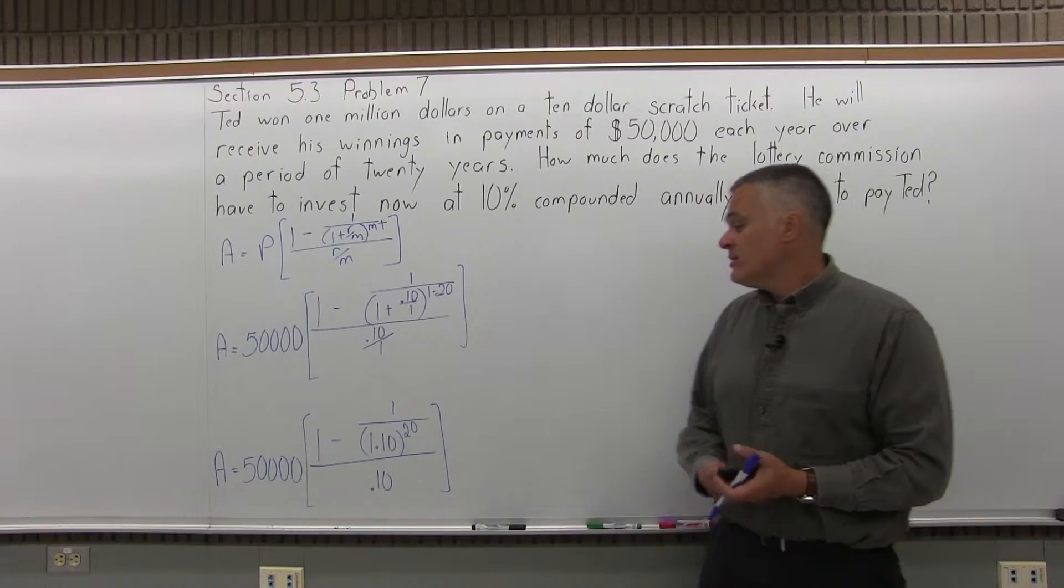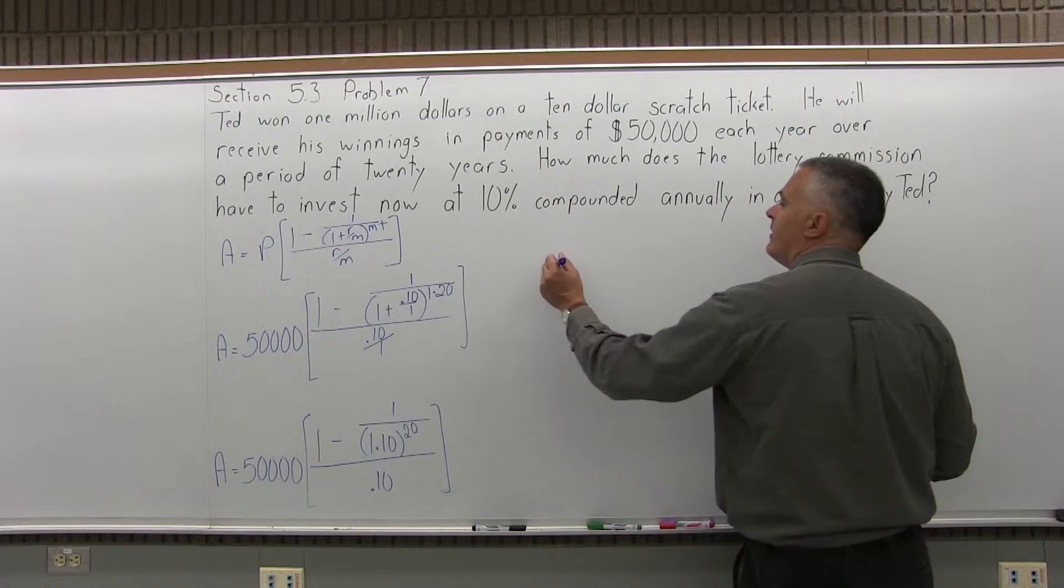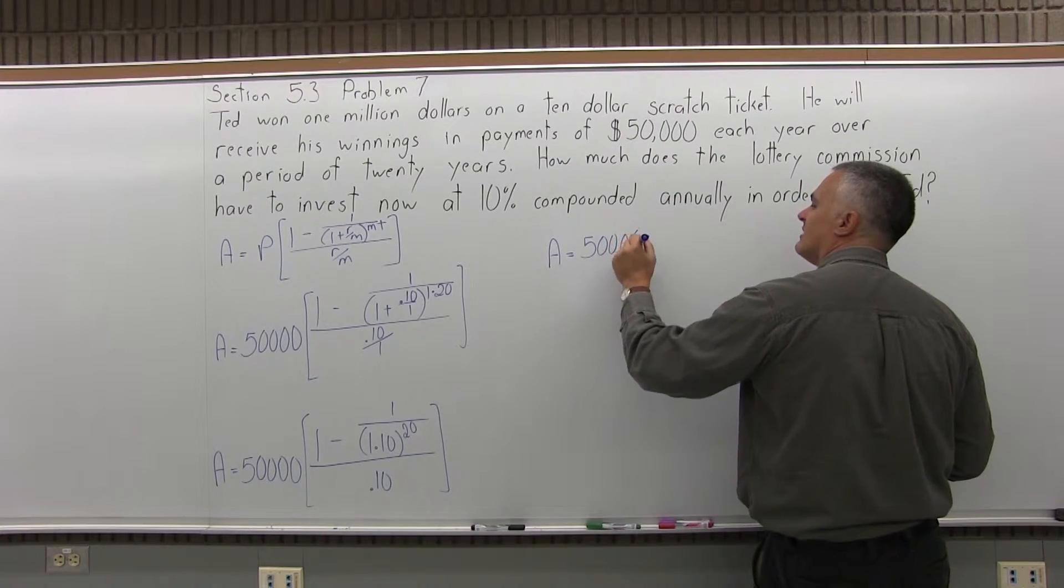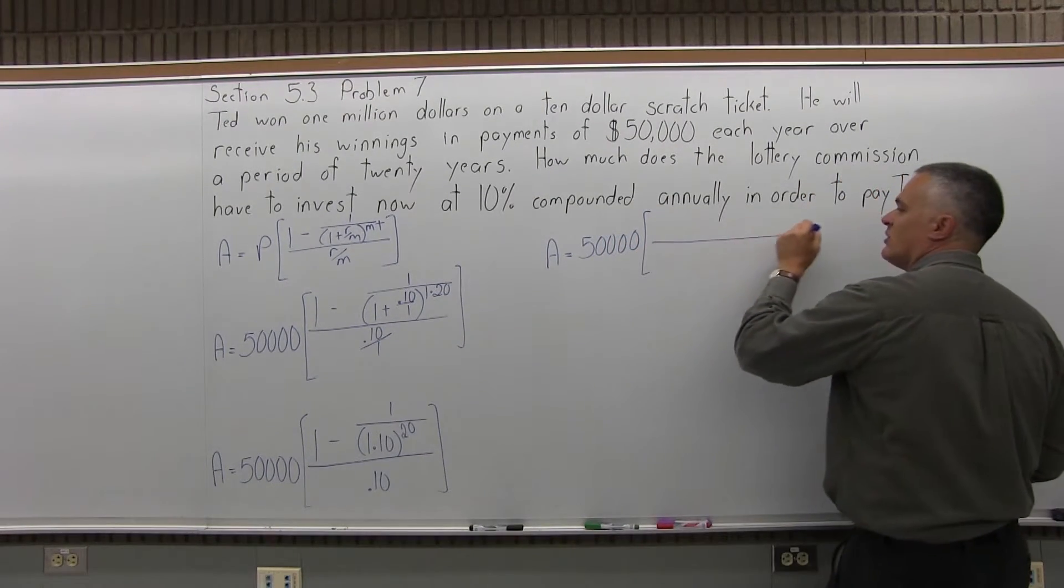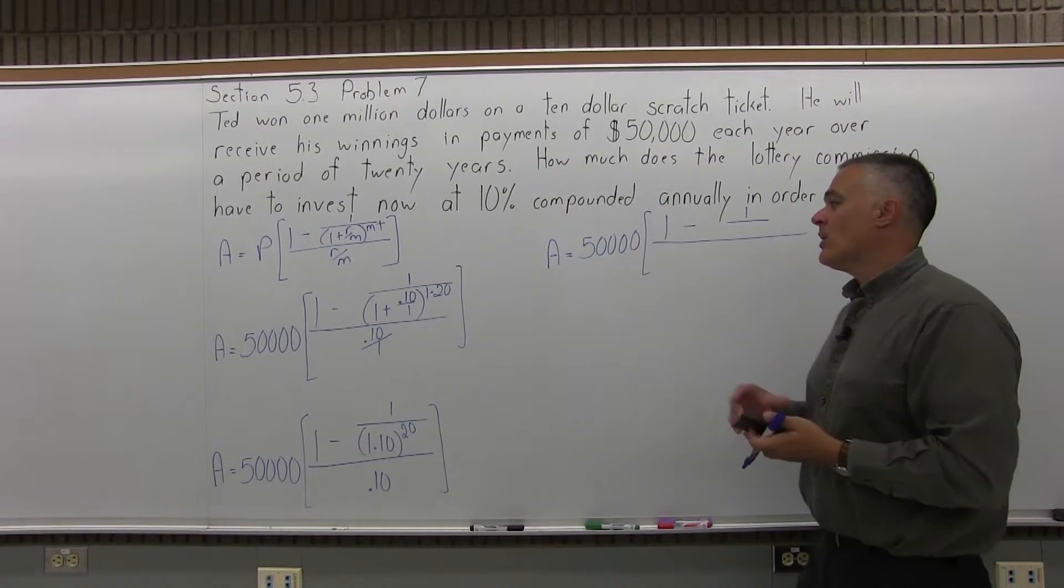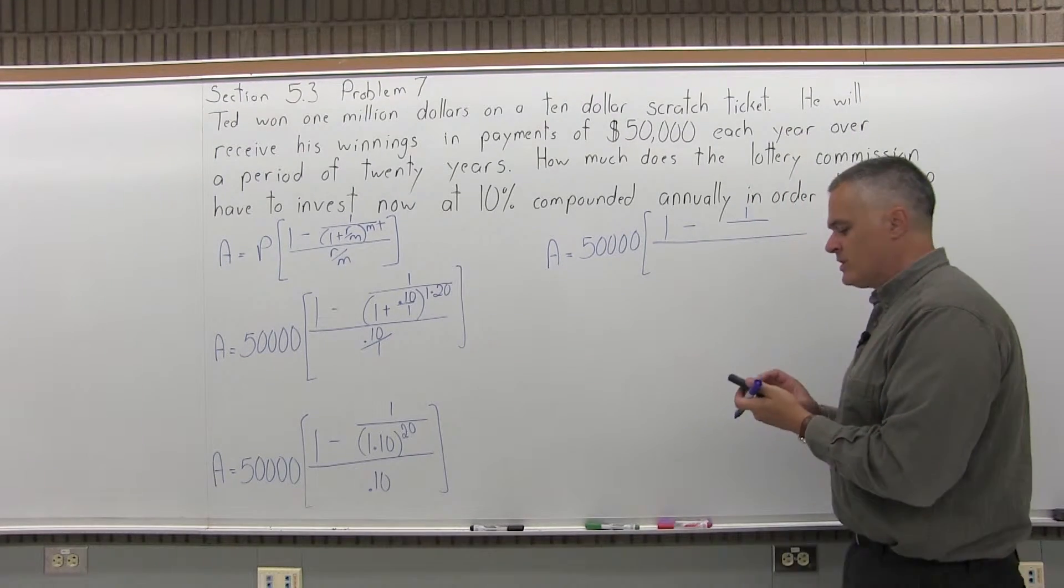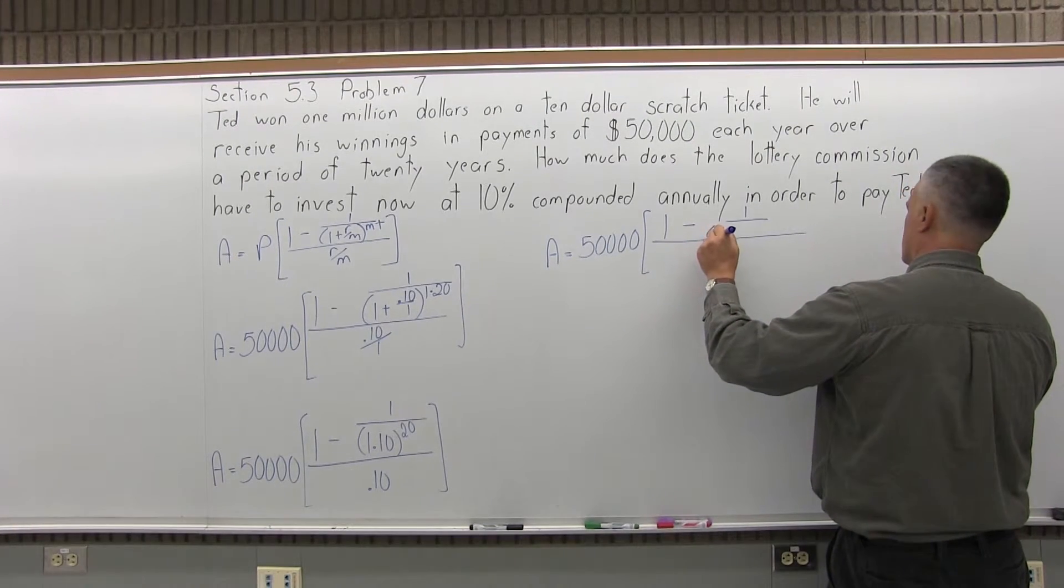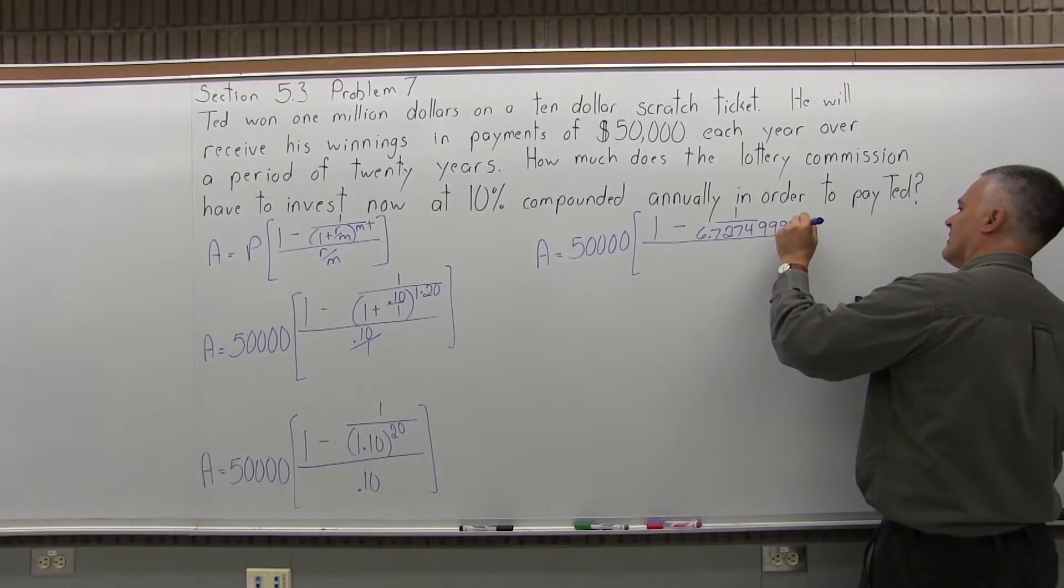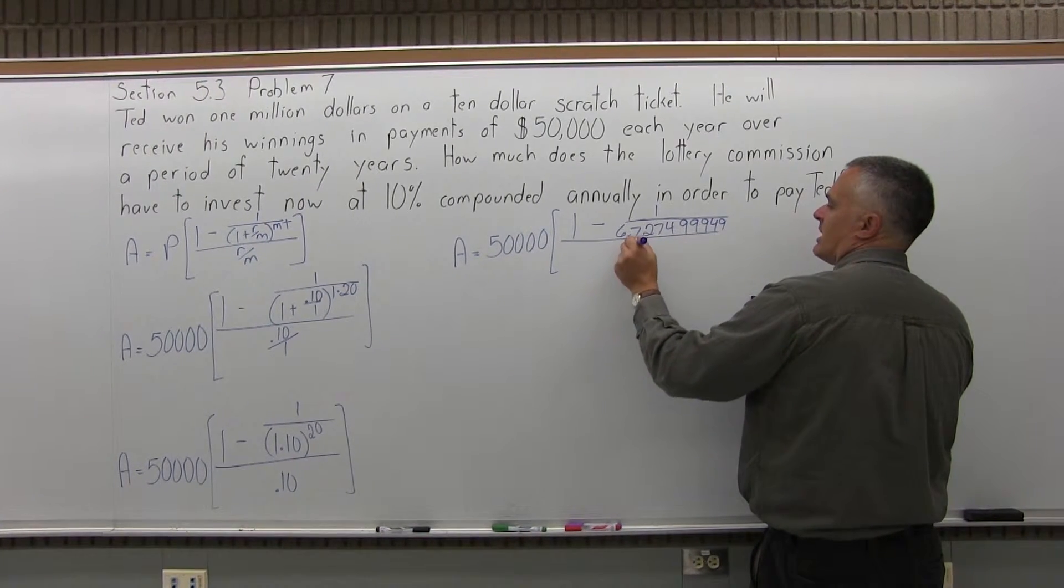So, that gets the problem started. Now, what I need to do is deal with the exponent of 20th power. That 1.10 to the 20th power, I have to work that out. So, that's going to give me A equals 50,000 times the brackets. And the numerator of the brackets, I have 1 minus 1 over the 1.10 to the 20th power, which is 6.727499949. And in the denominator of the brackets, I still have a .10.